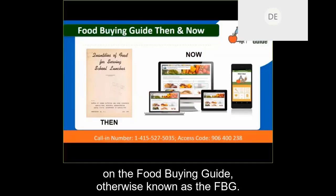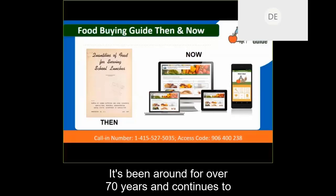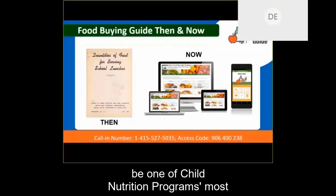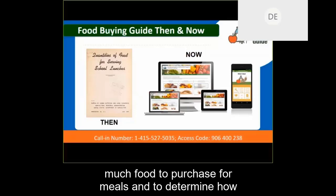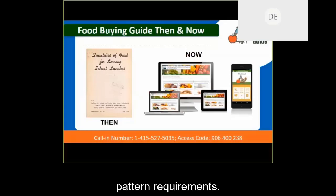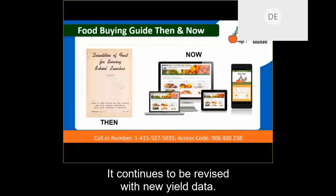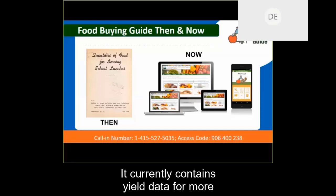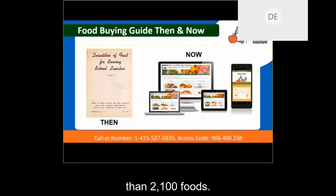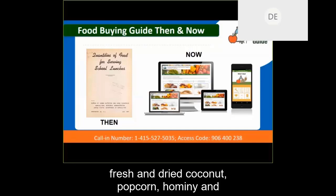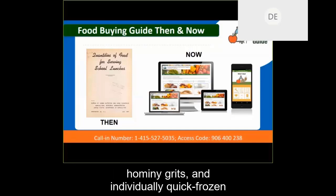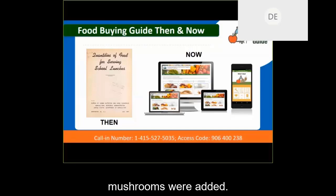I'm going to provide a quick background on the Food Buying Guide, otherwise known as the FBG. It's been around for over 70 years and continues to be one of Child Nutrition Program's most popular resources. It assists you in two main ways: to determine how much food to purchase for meals, and to determine how much each of these foods credits towards the meal pattern requirements. It continues to be revised with new yield data, currently containing yield data for more than 2,100 foods. Most recently, yields for seafood, tempeh, fresh and dried coconut, popcorn, hominy, hominy grits, and individually quick frozen mushrooms were added.